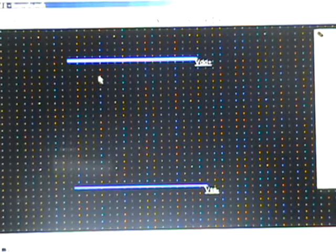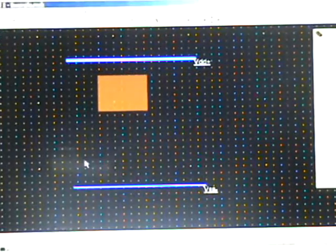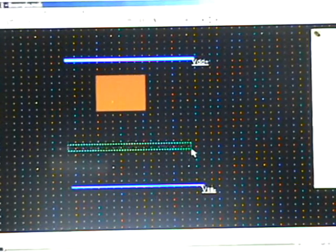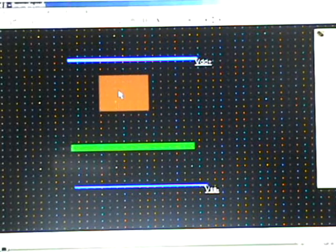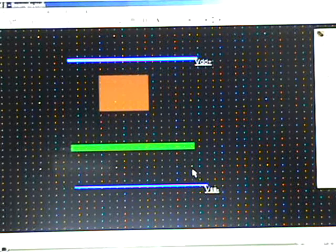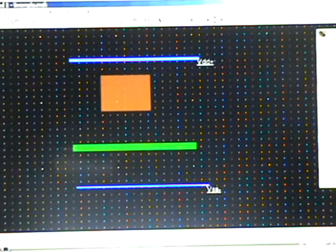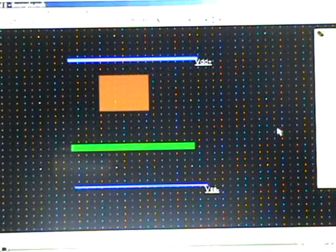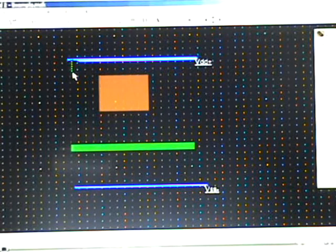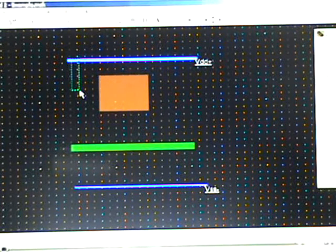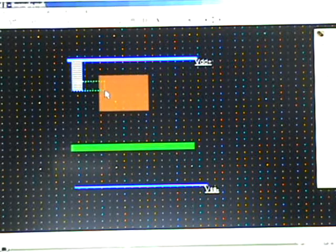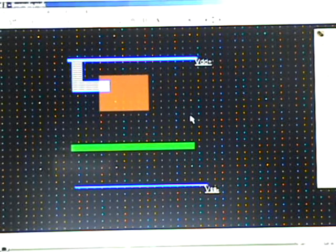This is our PMOS, and this is our N-diffusion. This is the P-plus diffusion, this is the N-plus. Now, since we are staying in one layer, we will run a connection here. Make it heavier, and connect this to the right side of the P-plus.